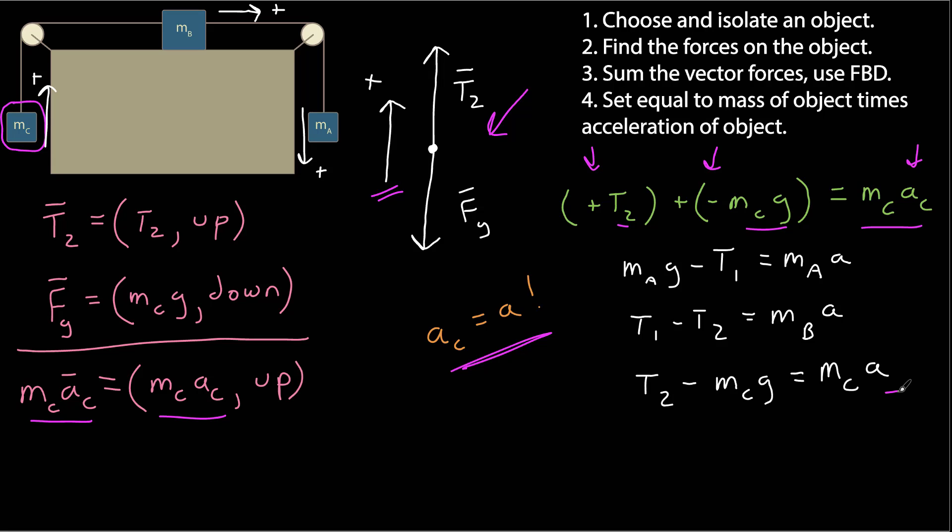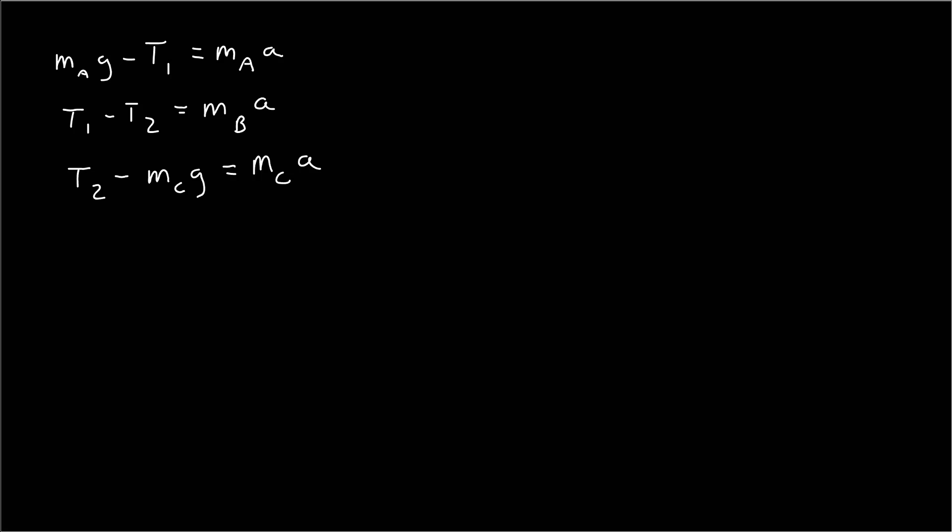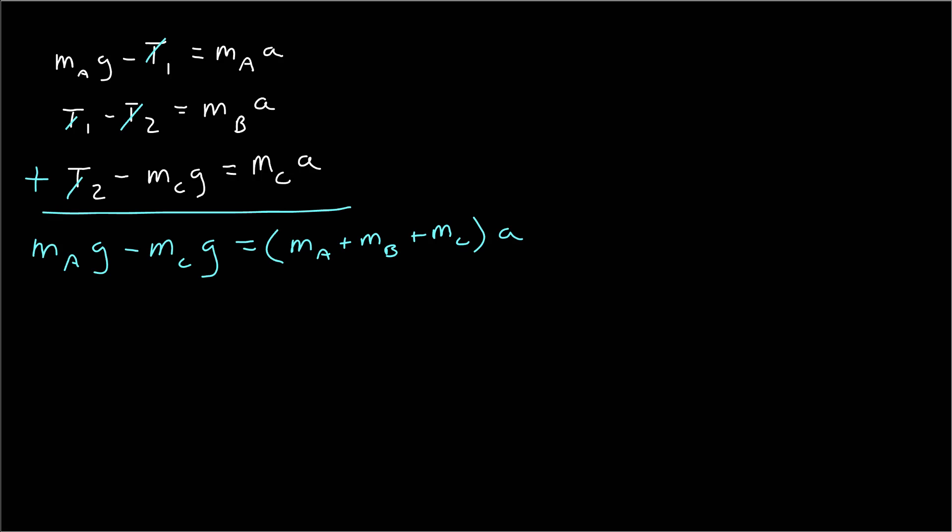Now I have three unknowns — a, t1, and t2 — and three equations. That means I have enough to solve. Looking at the three equations, if I add them all together, t1 and negative t1 cancel, and negative t2 and t2 cancel. I'm left with mass a times g plus mass c times g on one side, and all three masses times a on the other side.